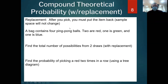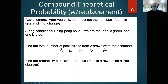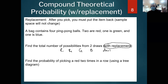Why this is useful: let's talk about picking ping pong balls from a bag. A bag contains four ping pong balls — two are red, one is green, and one is blue. We're going to find the total number of possibilities from two draws. We're talking about putting that thing back — two different events. So instead of just picking one out of the bag, I pick it out, put it back in, and then pick another.